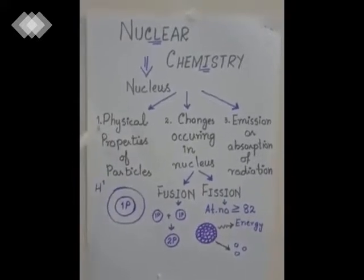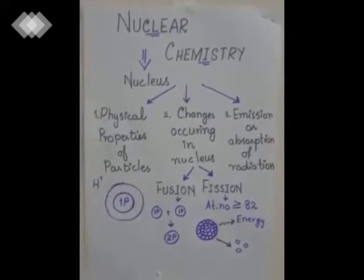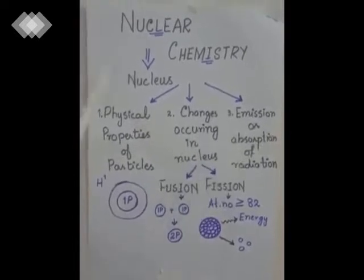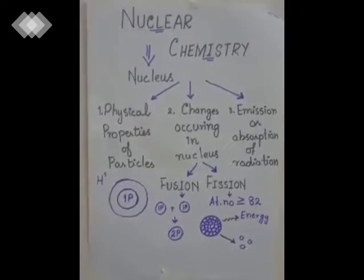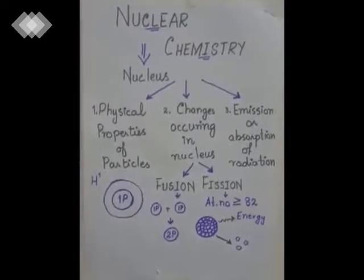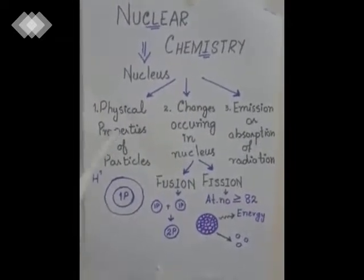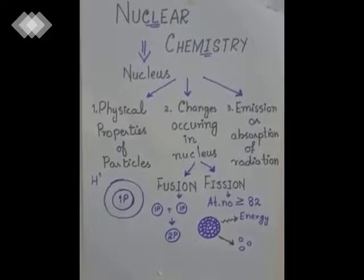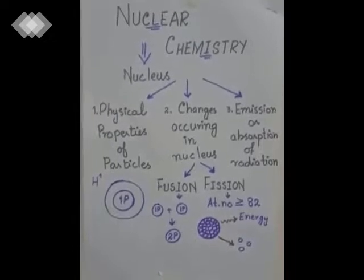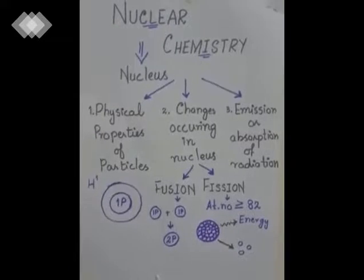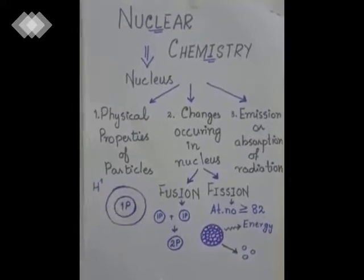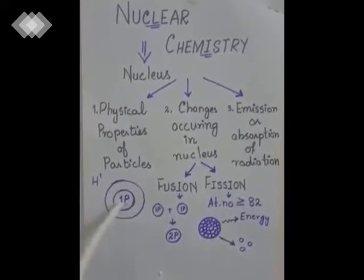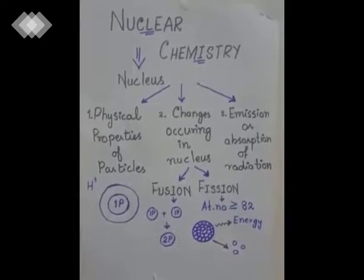In nuclear chemistry, we study: first, the physical properties of particles present in the nucleus; second, the changes occurring in the nucleus; and third, the emission or absorption of radiation from the nucleus. The particles present in the nucleus are protons and neutrons — both are heavier particles present at the center of the atom. Protons have positive charge while neutrons have no charge.